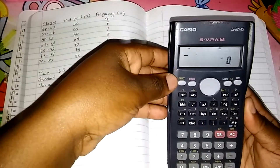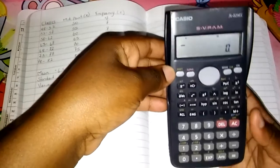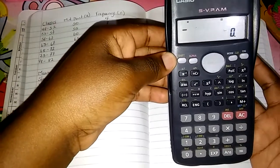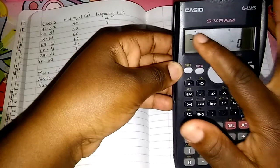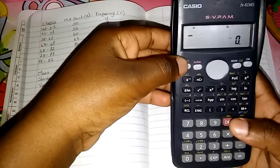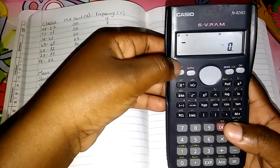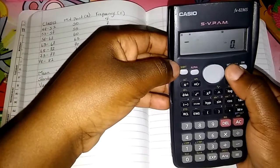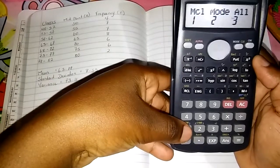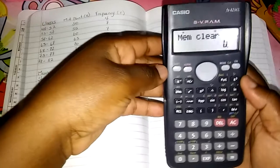First step, we must ensure that we clear the memory because if other stuff was in there from before, we need to get rid of it. You see M up there, we want to get rid of that M. First you're going to press shift, then mode, and then choose number 1 to clear the memory.